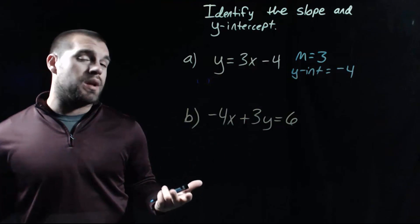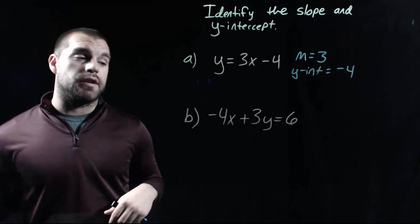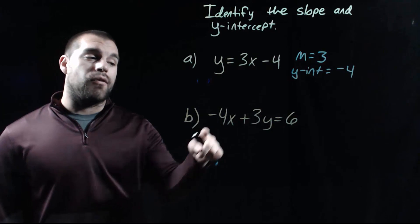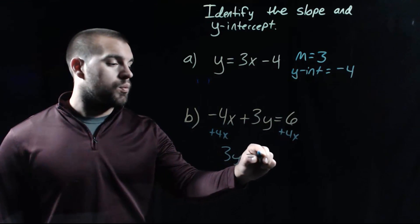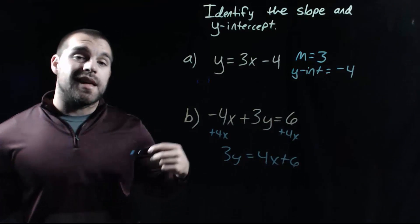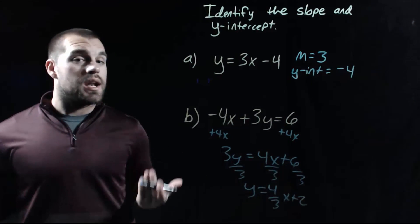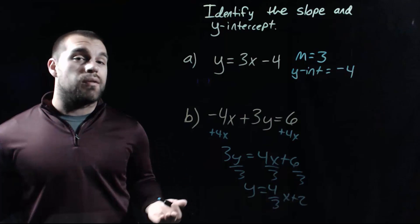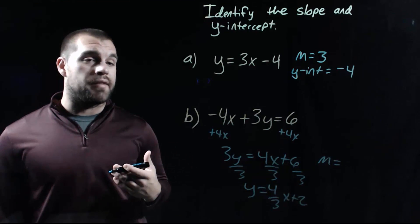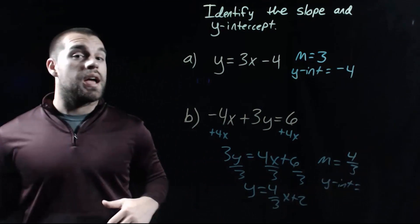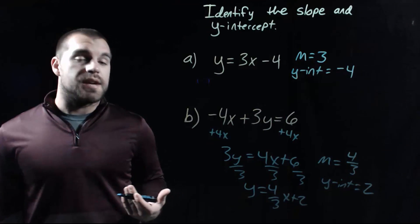In our second example, this equation is not written in y equals mx plus b form, so we can't just pull out the m and b values — we need to do a little rearranging first. I would take the negative 4x and add it over to the right-hand side, giving us 3y equals 4x plus 6. Then we divide everything by 3, and we end up with y equals four-thirds x plus 2. Now we can identify the slope as four-thirds and the y-intercept as 2.